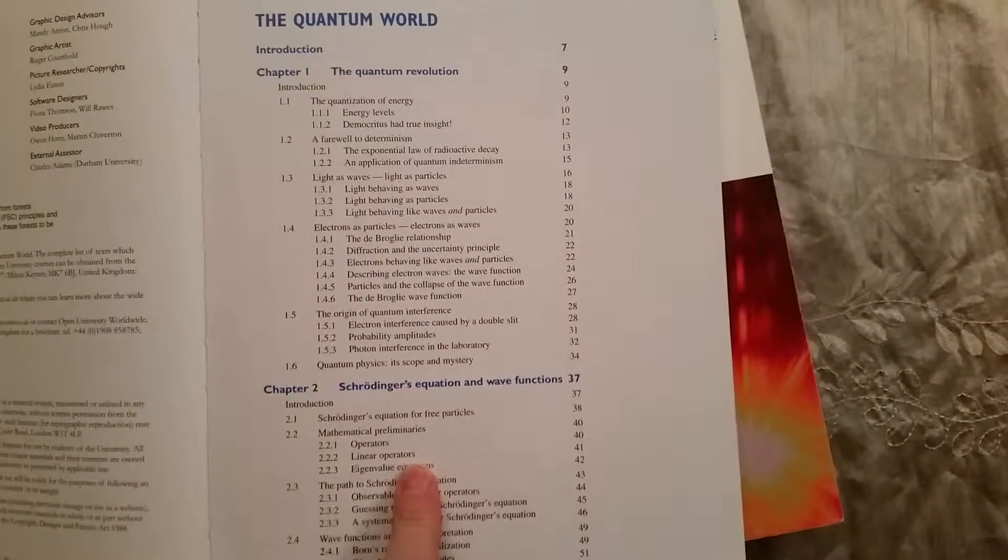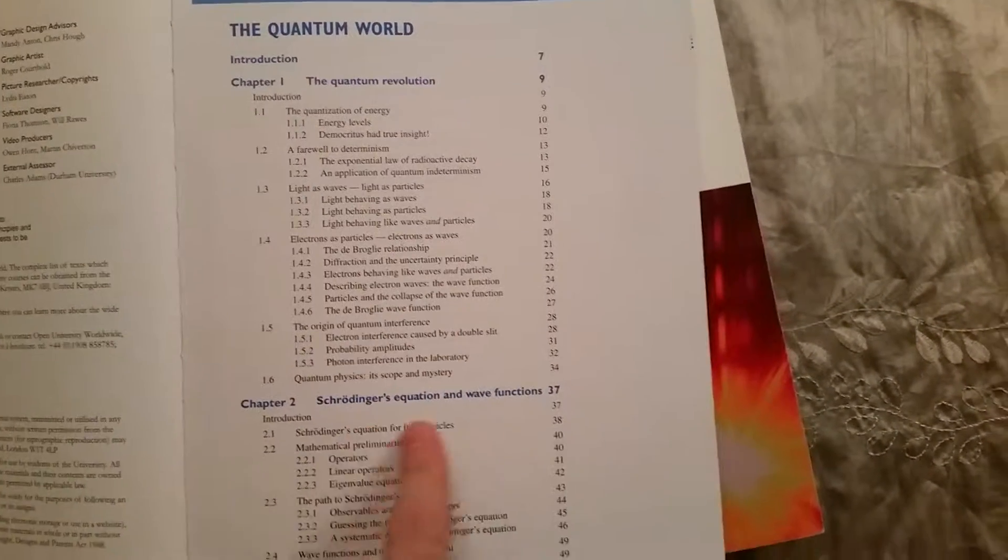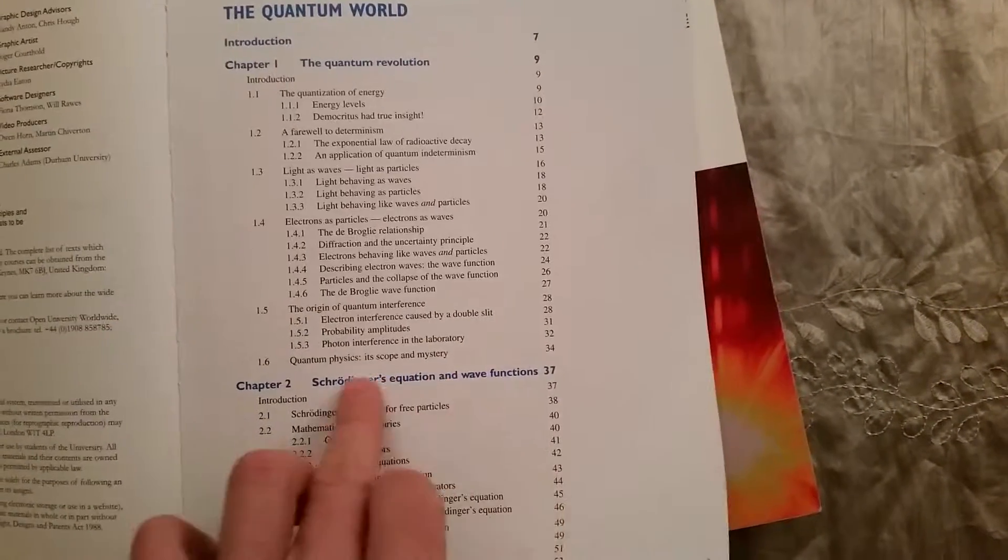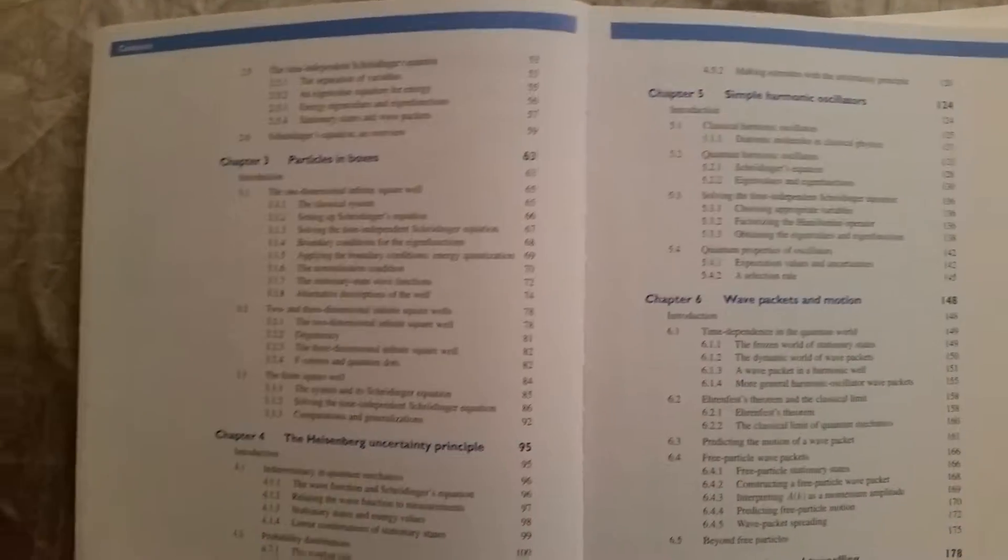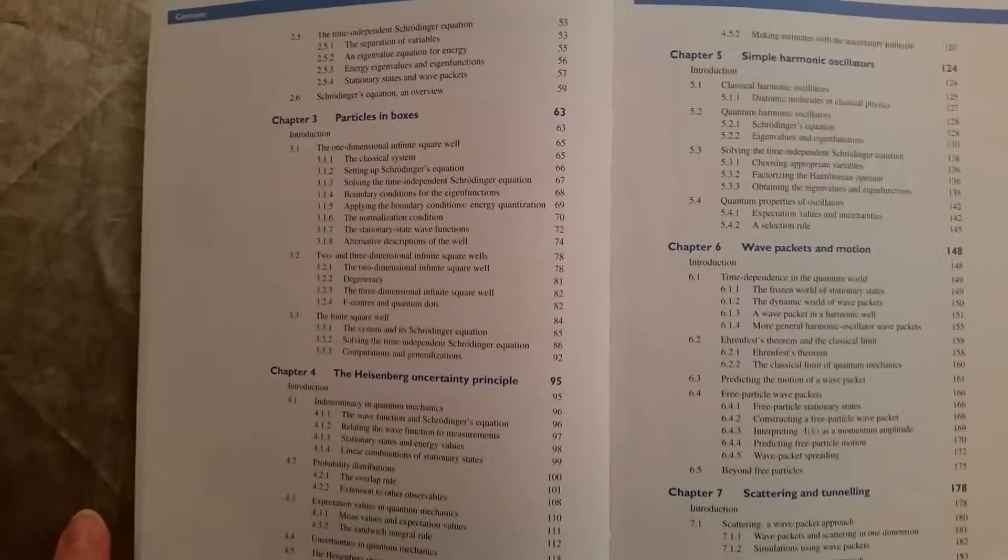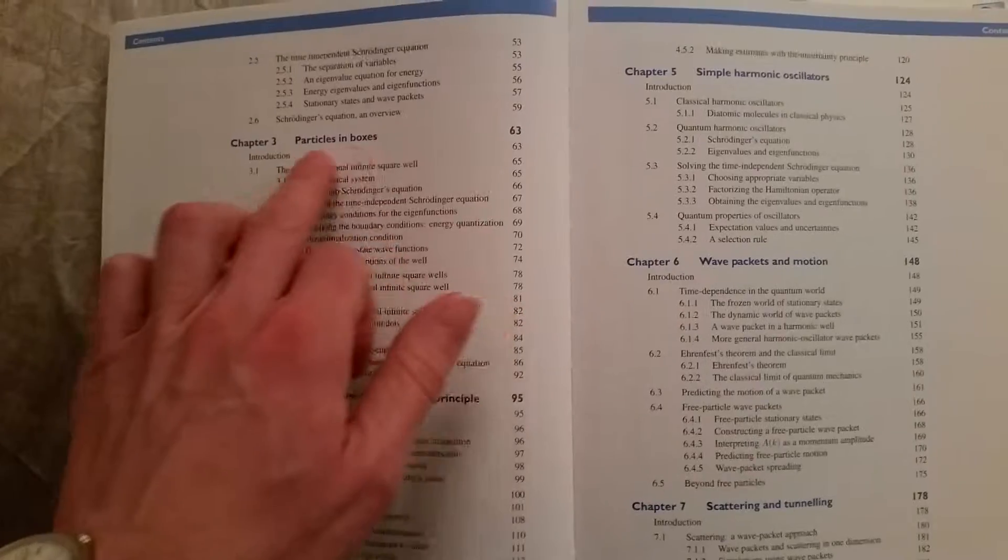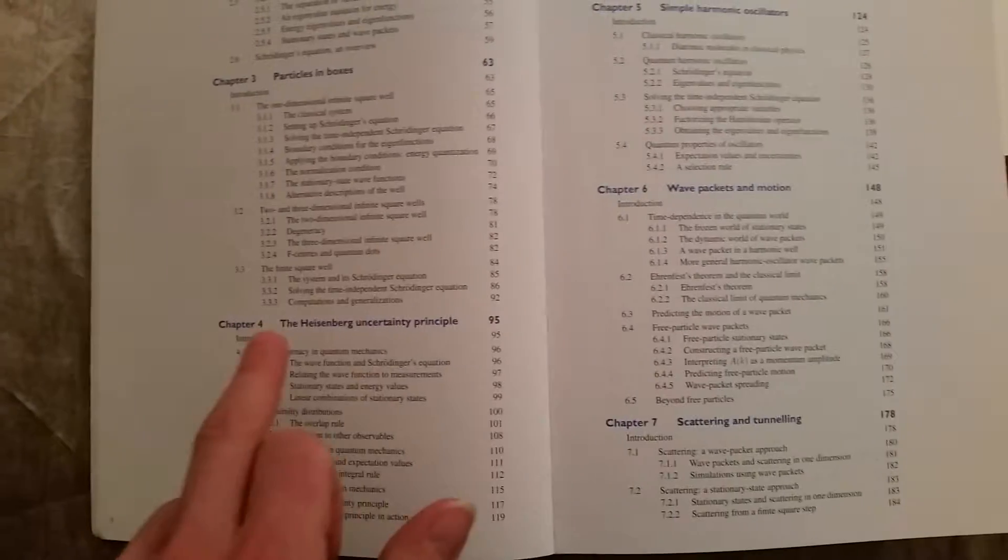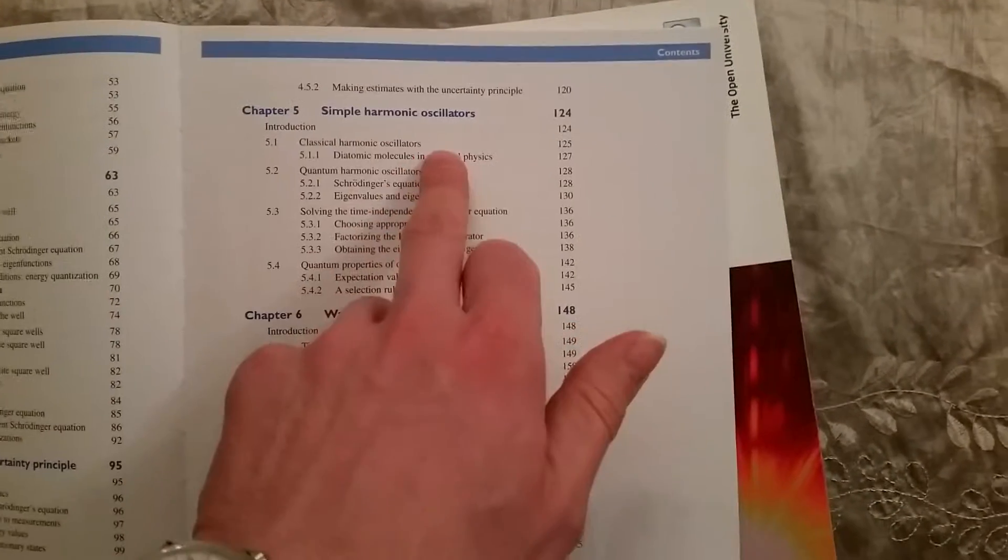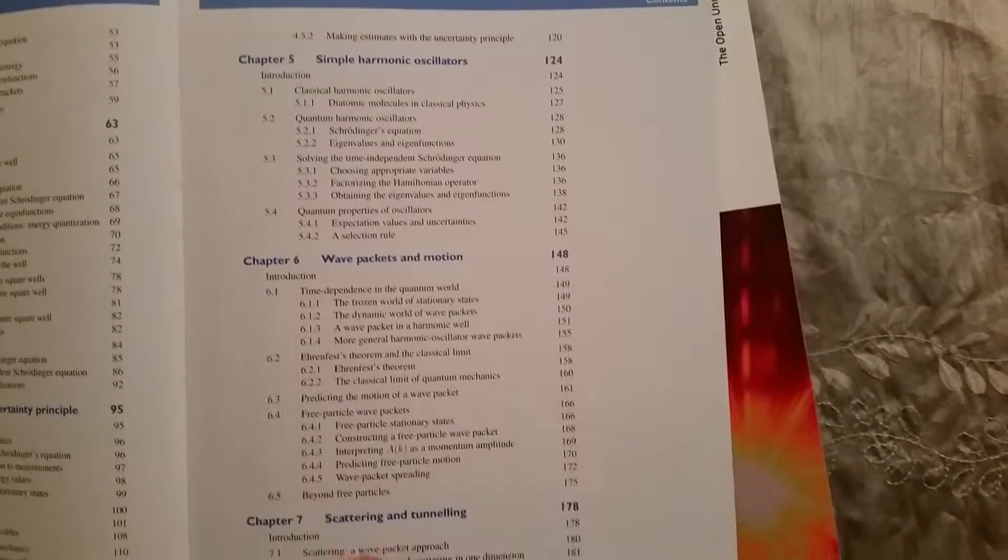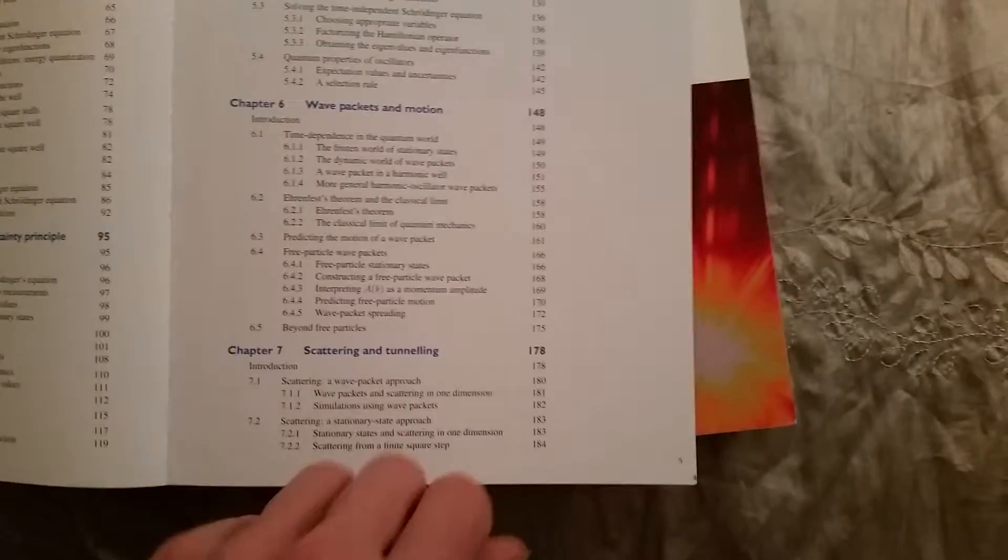This is how it's broken down: quantum revolution, Schrödinger's equation and wave functions. Those are very important and best to understand them as early as you can. Then you get various different examples of the Schrödinger equation with particles in boxes. It introduces the Heisenberg uncertainty principle, harmonic oscillators, wave packets and motion, scattering and tunneling.